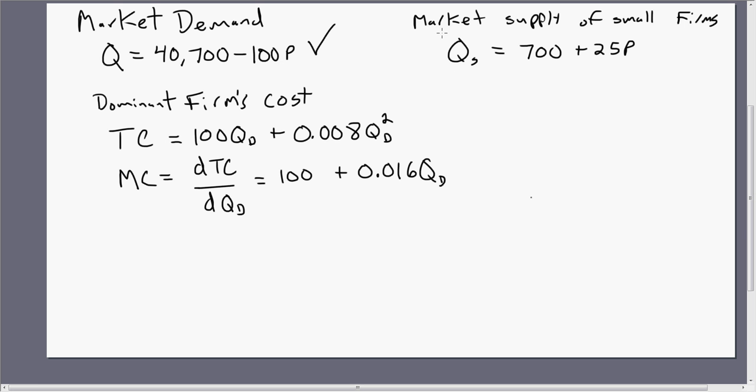You're going to be given information on the market supply of the smaller firms. So smaller firms will respond in this market based on this equation where Q subscript S, the quantity supply to smaller firms equals 700 plus 25P.